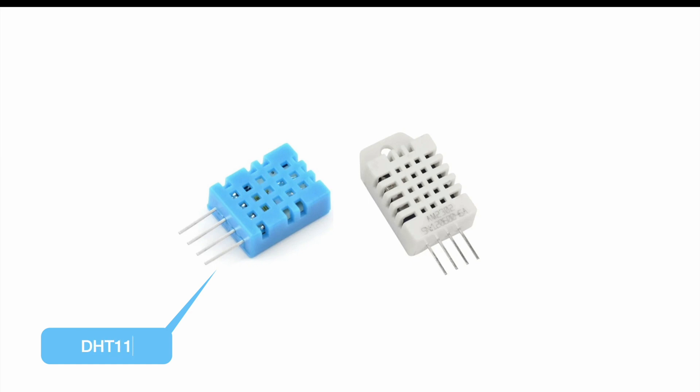Those two sensors are both part of the DHT series. The blue one is the DHT11 and the white one is the DHT22. Both the DHT11 and the DHT22 can measure temperature. Both models come also with a humidity measurement function but the measurement ranges and the accuracy is quite different.